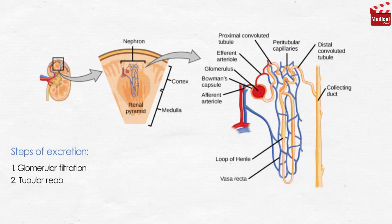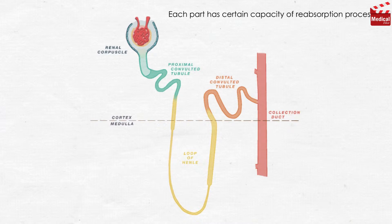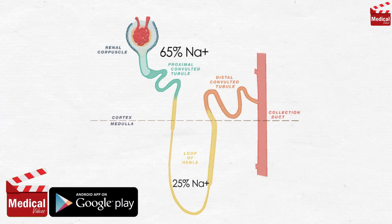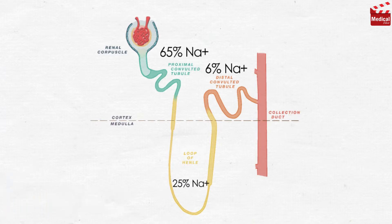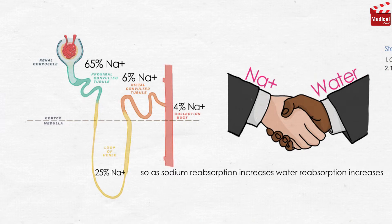The second step is tubular reabsorption. The body recovers most of the materials now present in the filtrate, so reabsorption of sodium, water, and any needed material from the tubule lumen to the blood occurs in nephron parts other than the glomerulus. Each part has a certain capacity for reabsorption: the proximal convoluted tubule reabsorbs about 65% of sodium ions, the loop of Henle 25%, the distal convoluted tubule 6%, and the collecting tubule 4%. Note that wherever sodium goes, water follows — so as sodium reabsorption increases, water reabsorption increases.